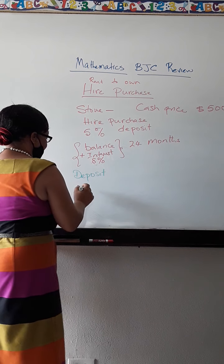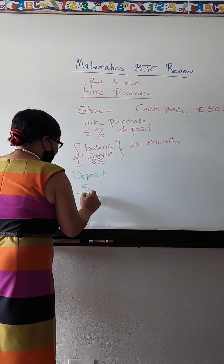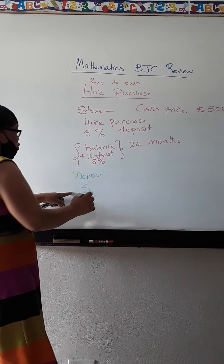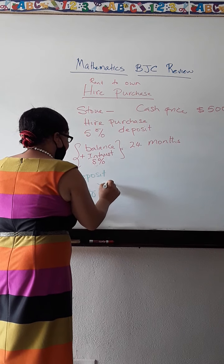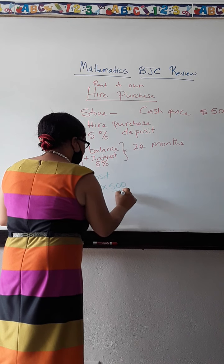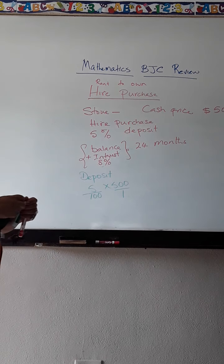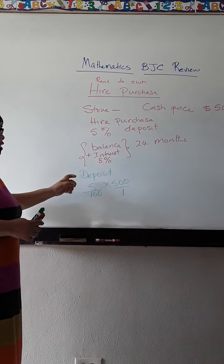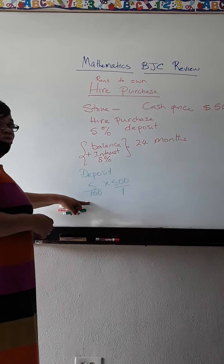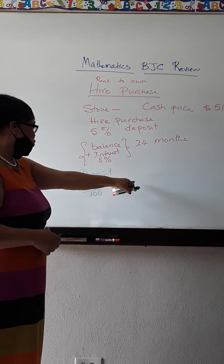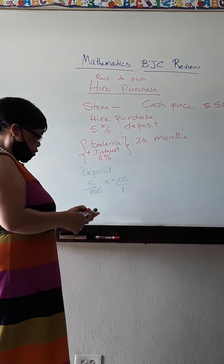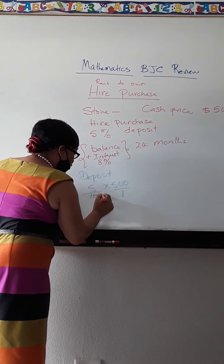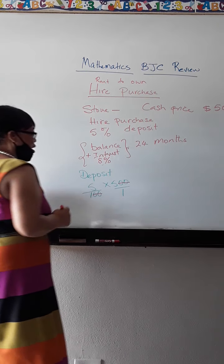My deposit is 5%. Percentage is always out of 100. 5% 5 over 100 times 500 over 1. That's the way I set up finding the deposit. The deposit is 5%. So I go 5 over 100 times the cash price is 500 over 1. Now let's do the calculation.